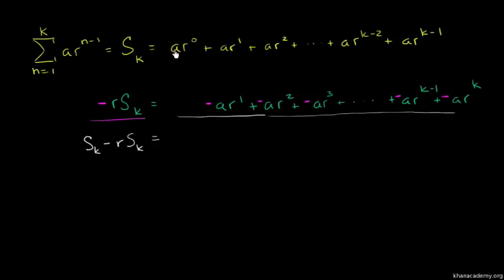We have a times r to the power zero, which is just a. On the other end, we get negative a times r to the power k. So S sub k minus r S sub k equals a minus a r to the power k.